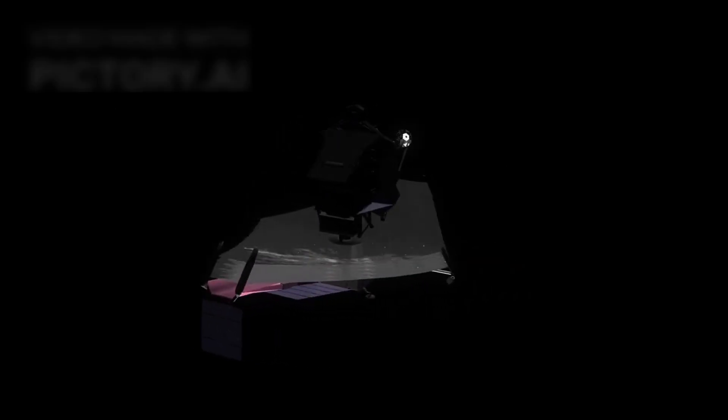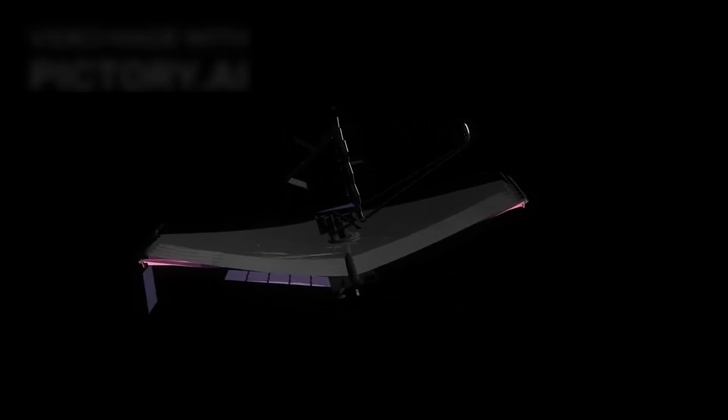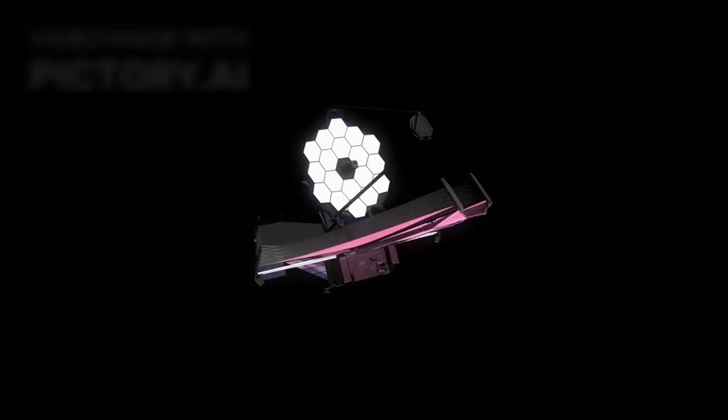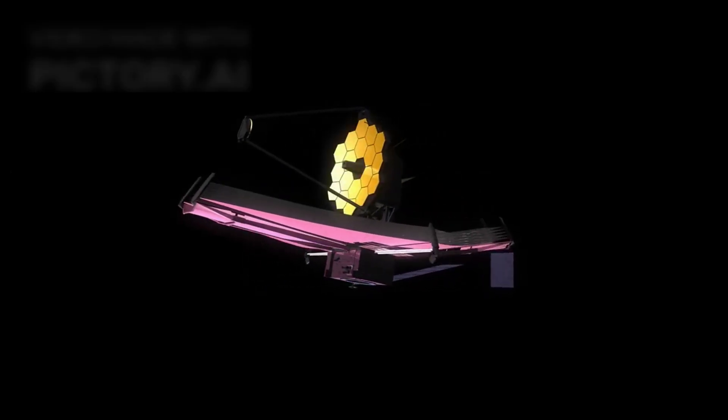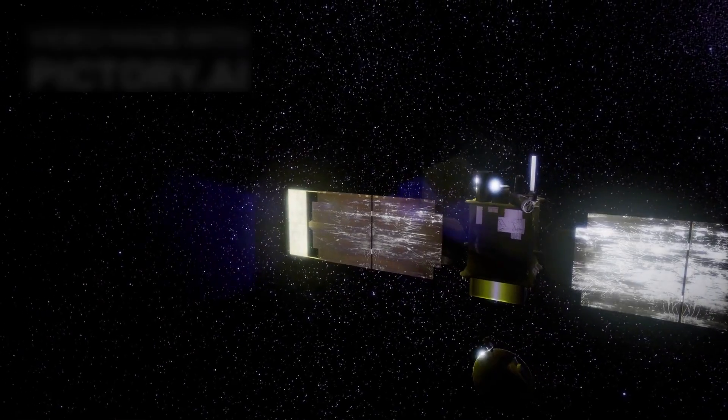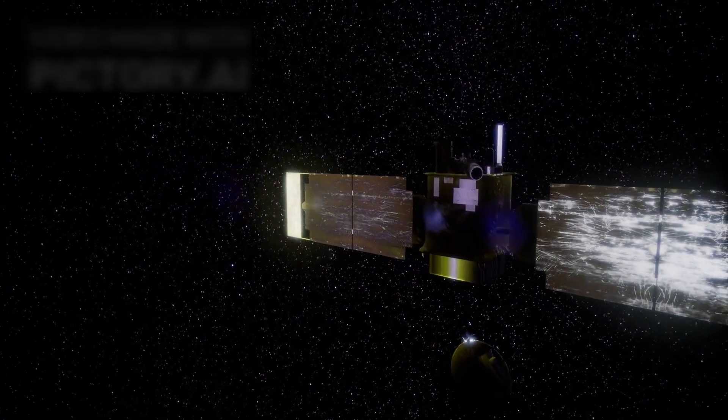Recently, JWST turned its gaze toward a remarkable target, K2-18b, an enigmatic exoplanet orbiting a dim red dwarf star. What it revealed has sent shockwaves through the scientific community.